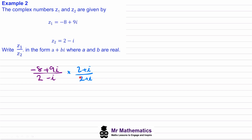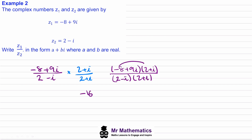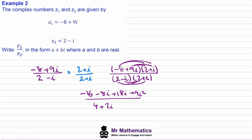2 minus i and 2 plus i form a complex conjugate pair. We write them in brackets, giving us negative 8 plus 9i multiplied by 2 plus i, all over 2 minus i multiplied by 2 plus i. Expanding the numerator: negative 16 minus 8i plus 18i plus 9i squared. The denominator gives 4 plus 2i minus 2i minus i squared.